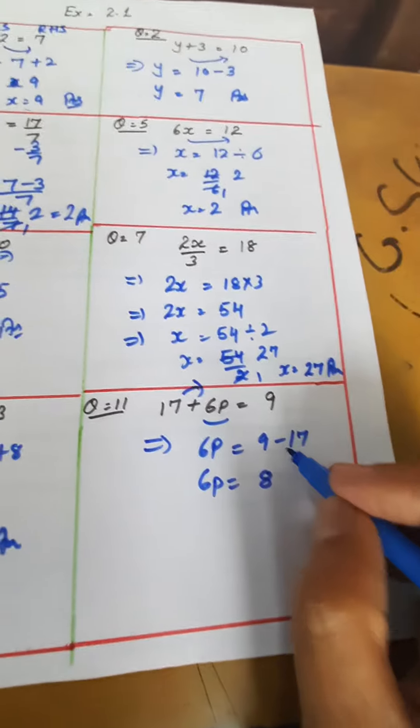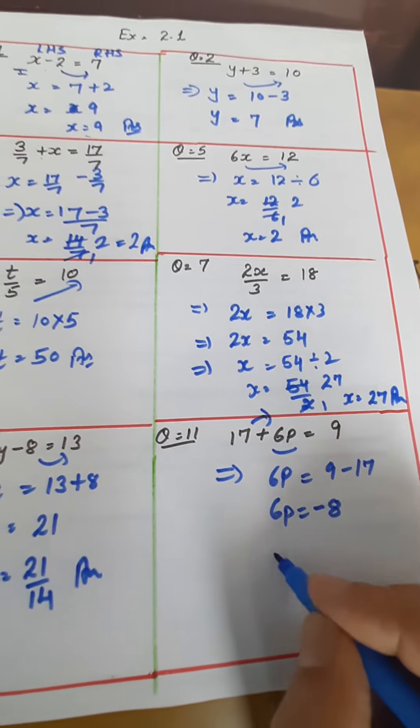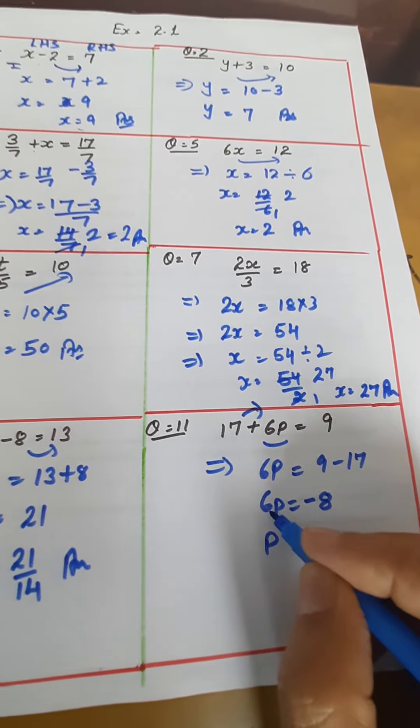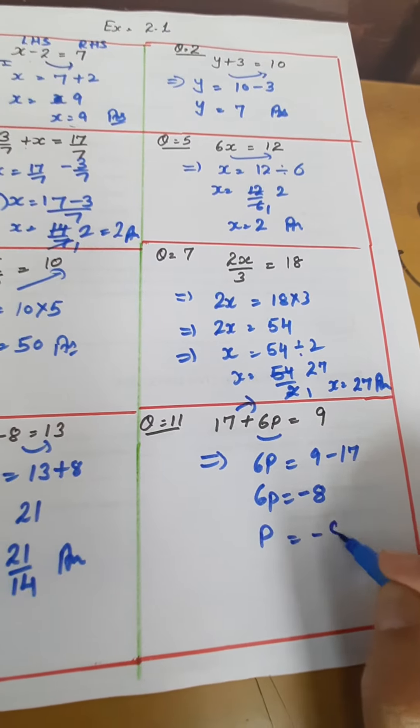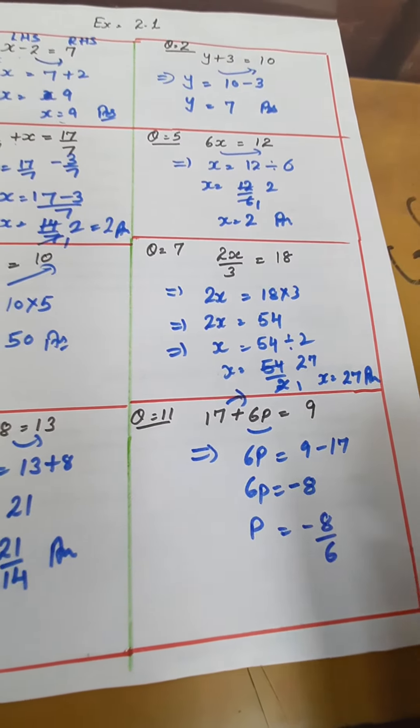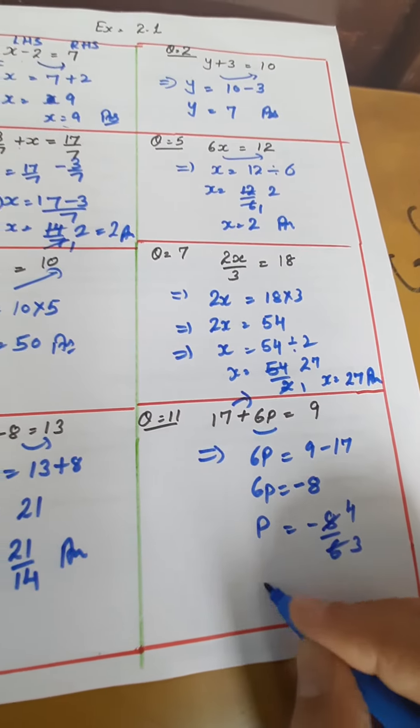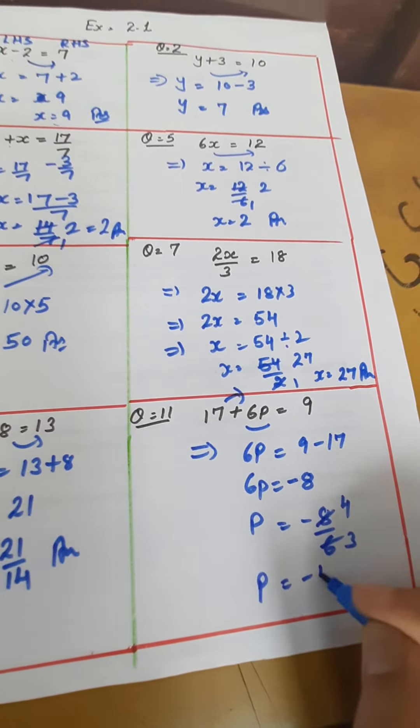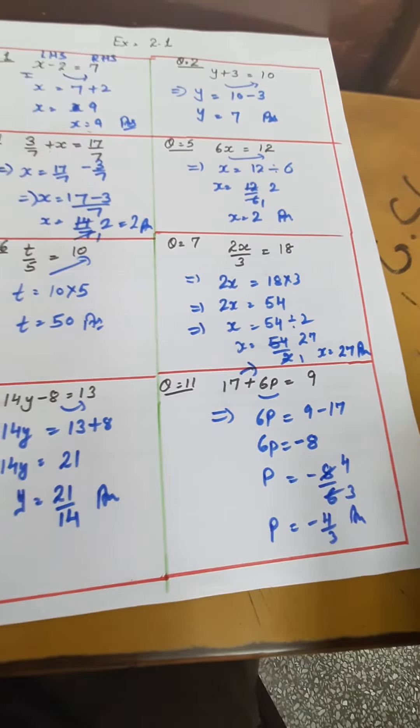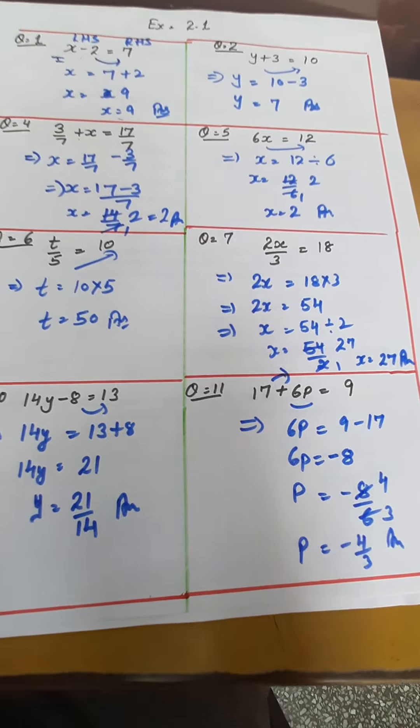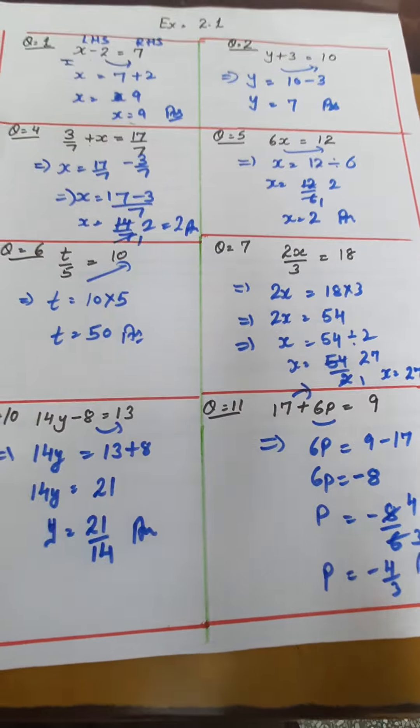But with negative sign. So p comes out to be - multiply which is into divide - minus 8 upon 6. Now convert that into the simplest form. 2 into 4 is 8, 2 into 3 is 6. So p comes out to be minus 4 upon 3. Thank you children. Hope the concepts are clear.